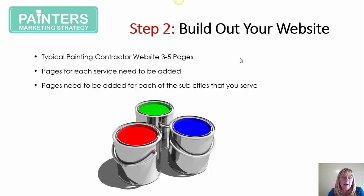You want to build out your website so that your pages hold more places in the major search engines. A typical painting contractor website may have somewhere between three and five pages. You need to ensure that you have additional pages added for each service you offer — for example, exterior painting services, interior painting services, commercial painting, deck and fence staining. In addition, you need a page dedicated to each of the cities you serve in your geographic market.